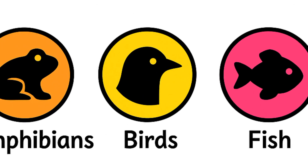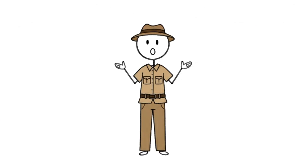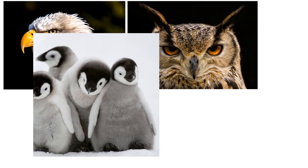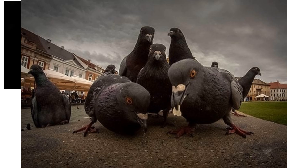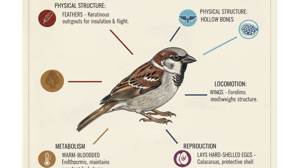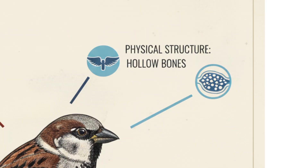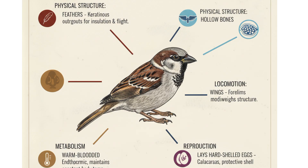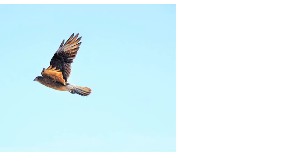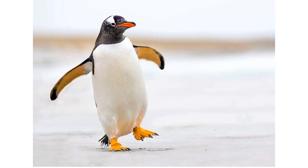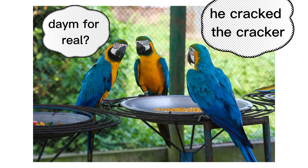Birds — the sky influencers. Birds are everywhere: eagles, owls, penguins, flamingos, pigeons — the street gangsters. How do you classify a bird? If an animal has feathers, hollow bones, wings, and lays hard-shelled eggs — it's a bird. Some fly, some don't. Penguins walk like they're late for church, flamingos balance like gymnasts, and parrots gossip like your auntie.